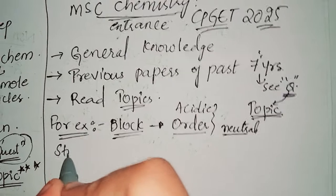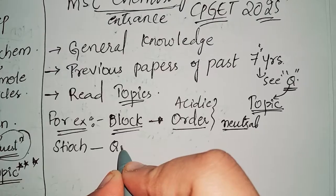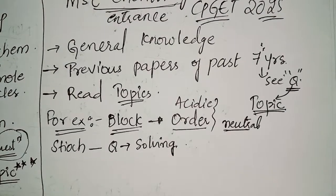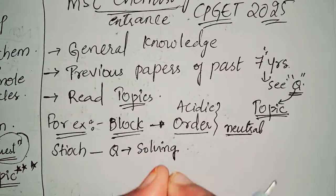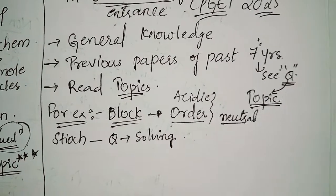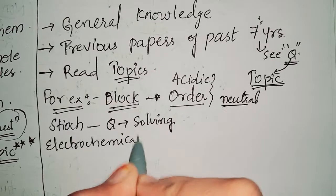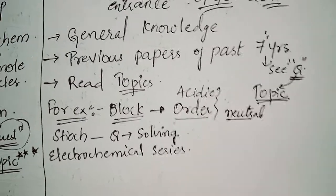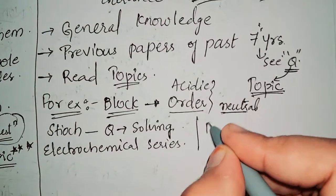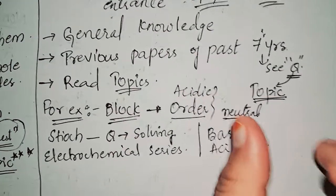And if we talk from stoichiometry, they can ask you questions regarding the solving part, okay, solving part. So you need to be prepared with this and also with what we call electrochemical series. Electrochemical series you need to remember, okay? And what is basic in nature, what is acidic in nature, the important questions you need to prepare for this.